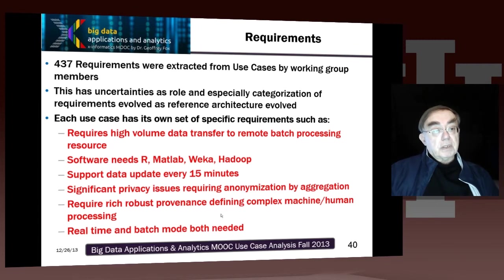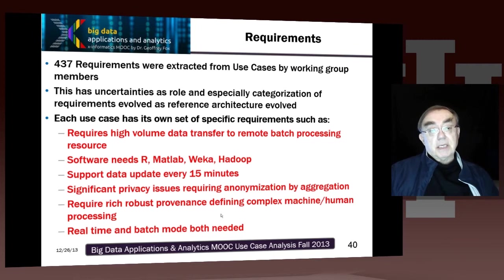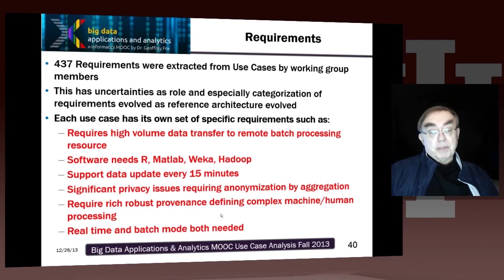We had 437 requirements which we extracted from the 51 use cases. And as I say, this is hardly an exact science, because one person's given requirement can be written as one requirement or three requirements depending on its granularity. The types of requirements you can get include things like: software needs R, software needs MATLAB or Hadoop, and so on.